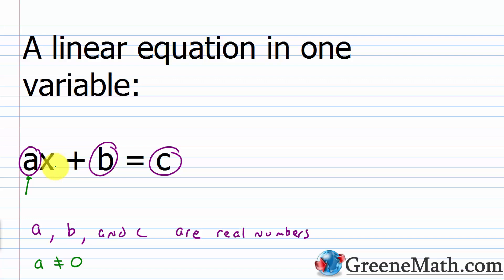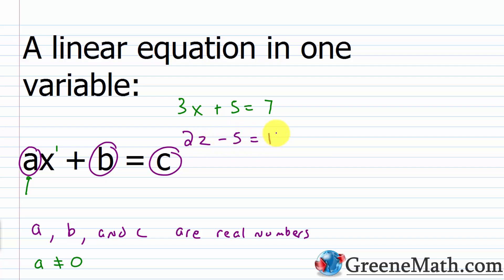Because this type of equation contains real numbers and a single variable — in this case X — raised to the first power, we sometimes refer to this as a first degree equation. Some examples: 3X plus 5 equals 7 is a linear equation in one variable. Or 2Z minus 5 equals 11. Or negative 27Y plus the square root of 2 equals negative 15. These are each an example of a linear equation in one variable.